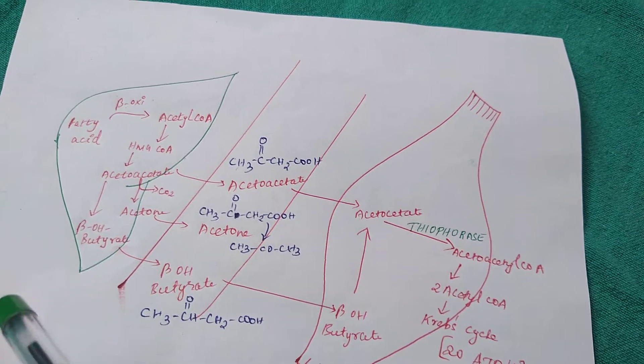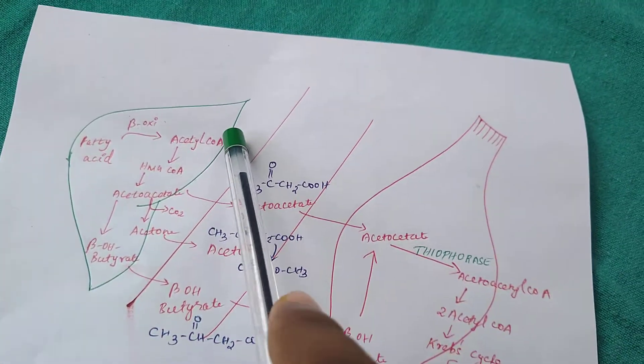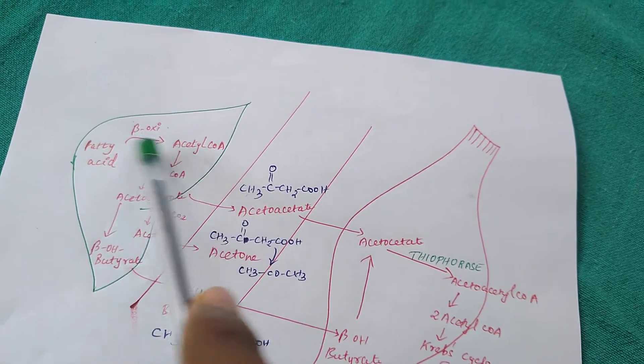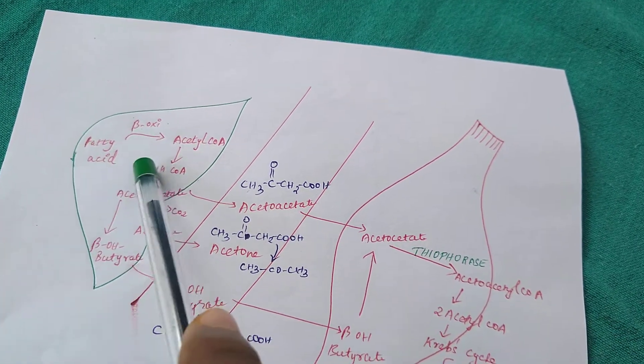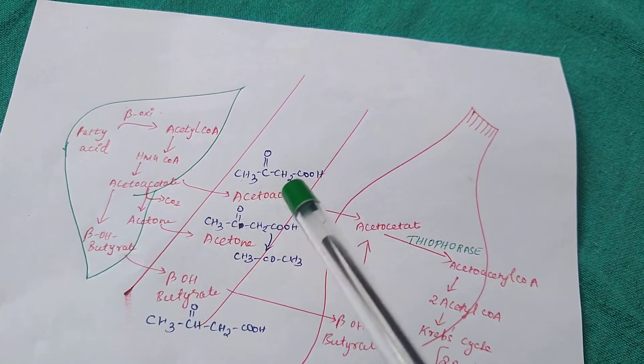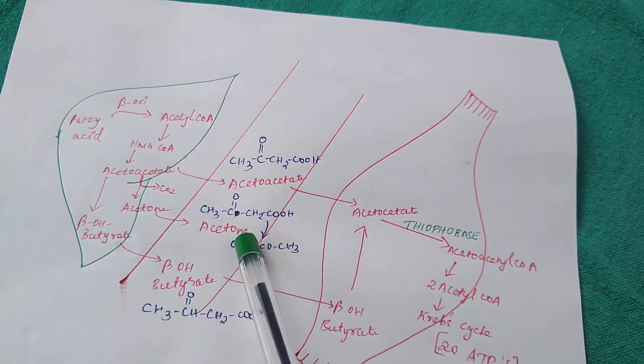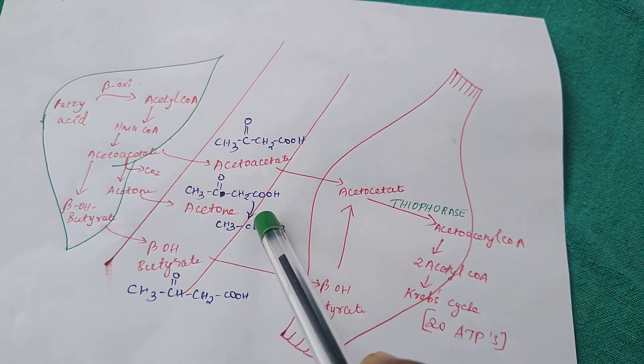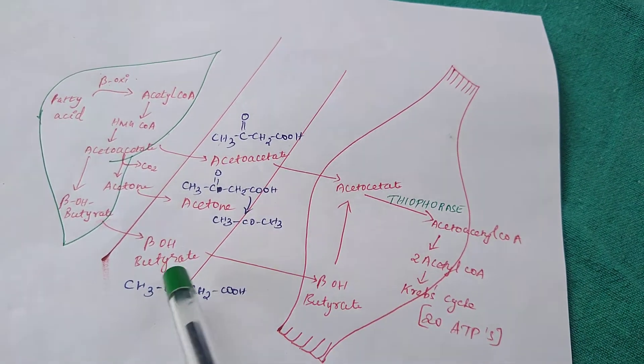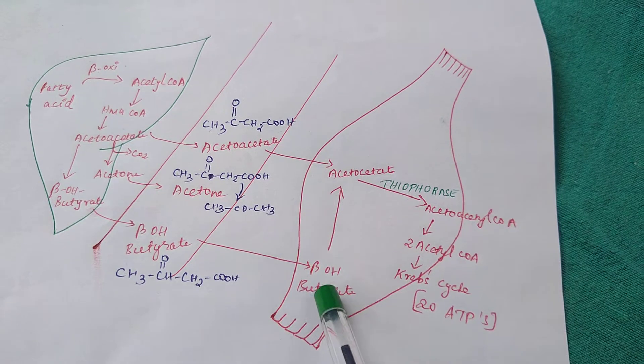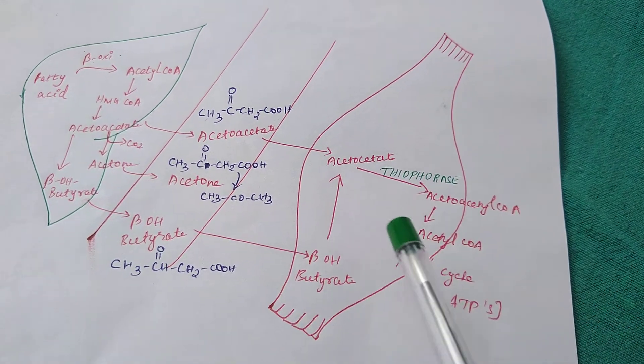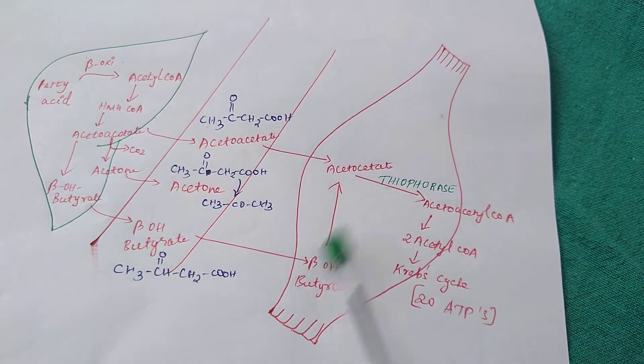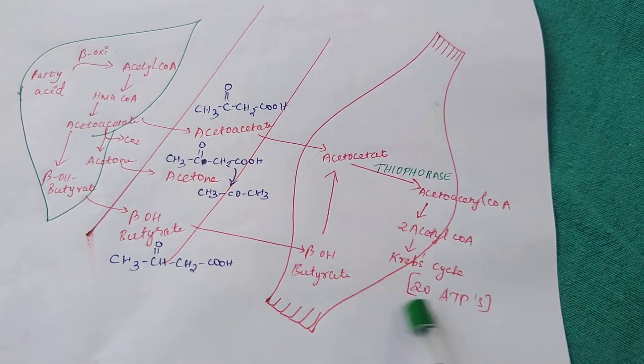Normally ketone bodies are synthesized in the mitochondria of liver from acetyl-CoA. We get acetyl-CoA from beta oxidation of fatty acids. The ketone bodies we know are acetone, acetoacetate, and beta-hydroxybutyrate. Acetone is a gas that we cannot utilize and will be expired. The acetoacetate and beta-hydroxybutyrate will be taken up into peripheral muscles and adipose tissues. With the help of thiophorase enzyme, these ketone bodies will be utilized and we get 20 ATPs from each molecule of ketone bodies.